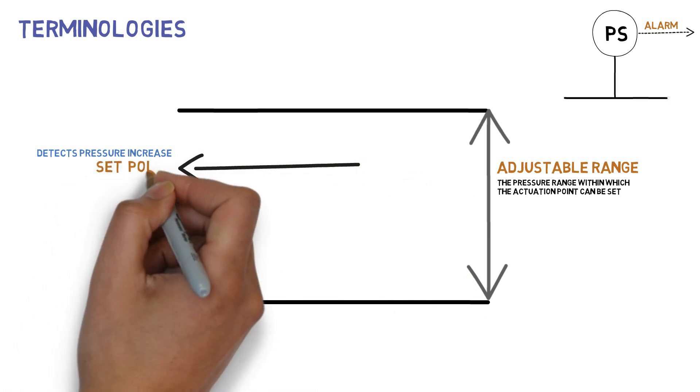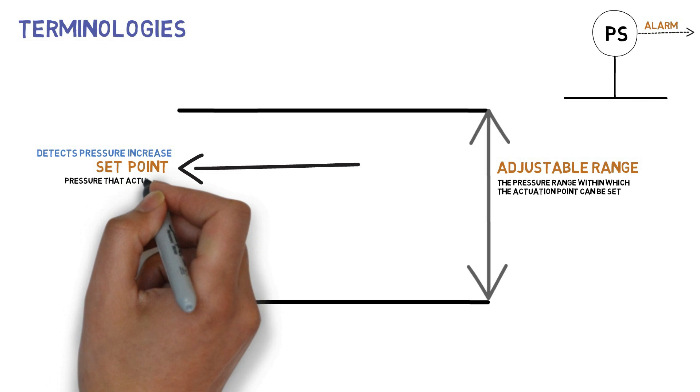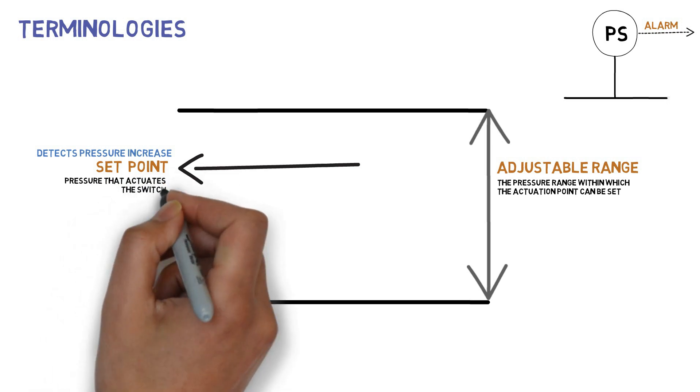Set point is the pressure that actuates the switch to open or close an electric circuit.